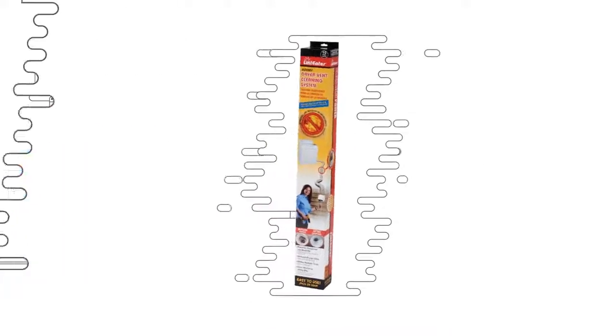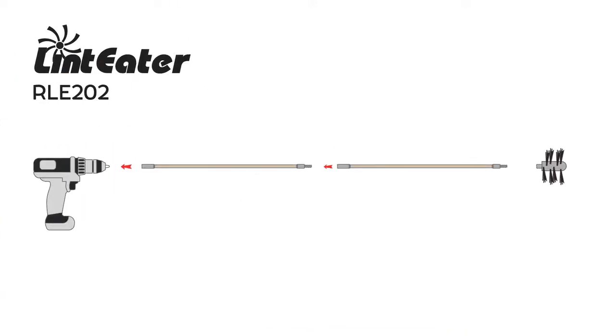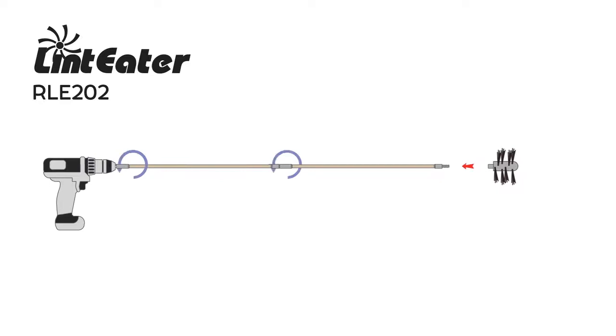The Lint Eater is a drill-powered, flexible rotary brush system used to remove dryer lint from through-the-wall vents, extended vent systems, and other hard-to-reach places.